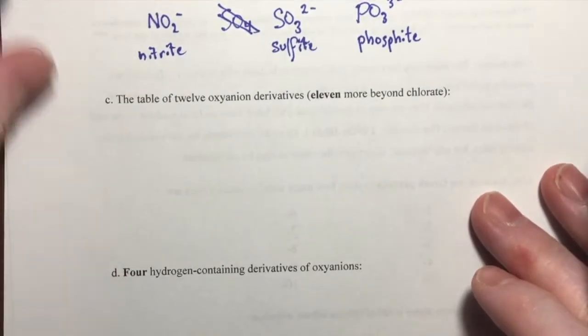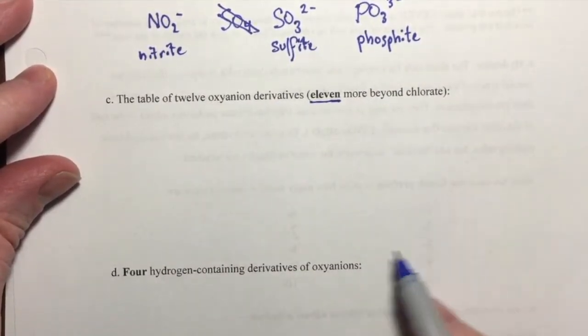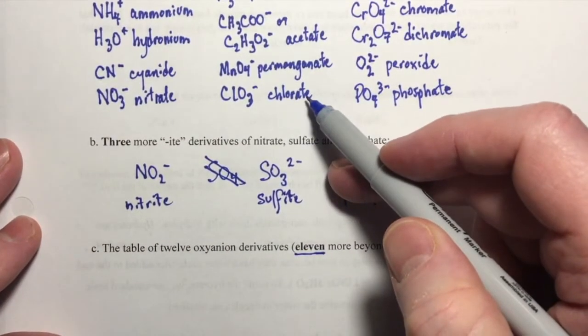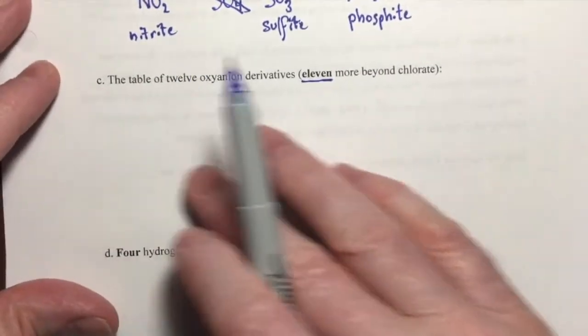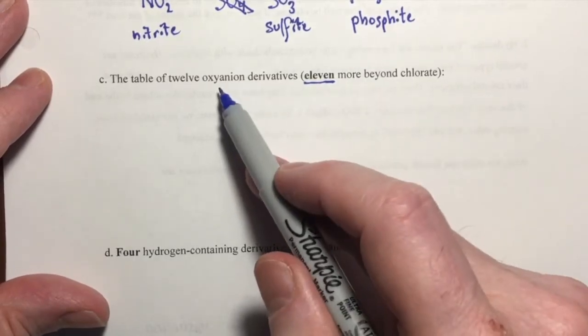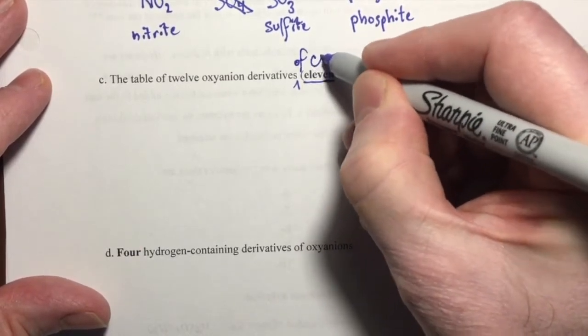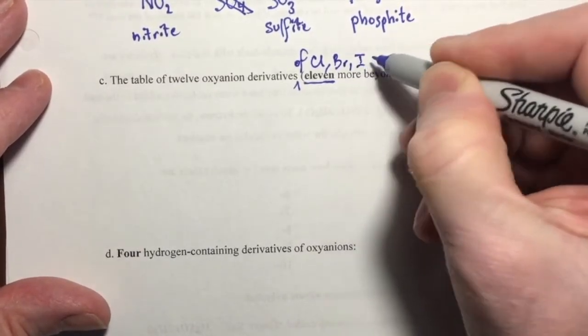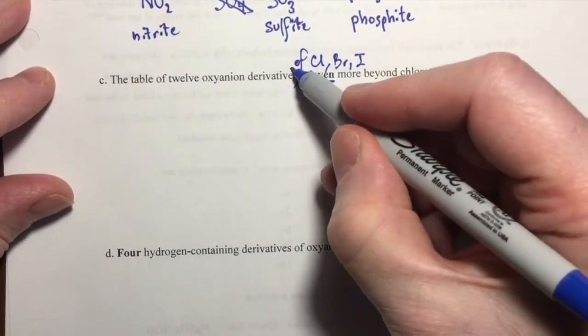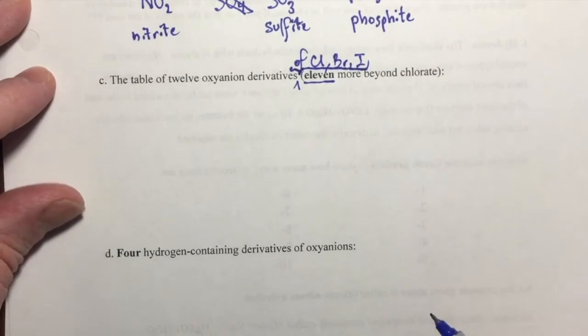To that list, we're going to add 11 more. And I'm going to draw a table of 12 here, but one of these 12 you have already learned - chlorate. So although I'm going to draw 12 here, you're really learning 11 more. And they are the oxyanion derivatives of chlorine, bromine, and iodine. So there's a little typo there, it needs this phrase added - of chlorine, bromine, and iodine - oxyanion derivatives of those three elements.